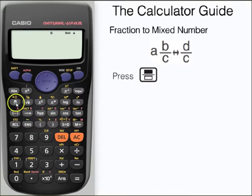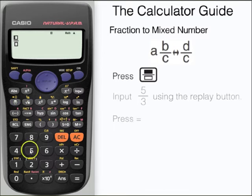Let's try now to change between a fraction and a mixed number. To do this we're going to input an improper fraction, 5 thirds, and then press equals.